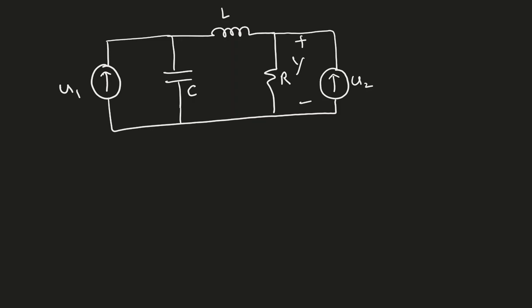Here I have two inputs. One is U1, which is a current source, another input U2, that is also a current source. So it is a multiple input, single output system. The output I have, Y right here, is the voltage across the resistor.